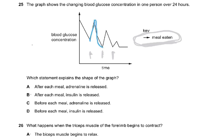Then the blood glucose goes down, you take another meal, it goes up again and then back down. Which statement explains the shape of the graph after each meal? Insulin has been released — because that is what results in the blood glucose oscillating, increasing then decreasing after each meal.